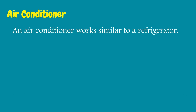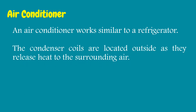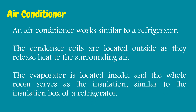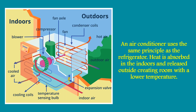An air conditioner works similar to a refrigerator. The condenser coils are located outside, as they release heat to the surrounding air. The evaporator is located inside, and the whole room serves as the insulation, similar to the insulation box of a refrigerator. An air conditioner uses the same principle as the refrigerator — heat is absorbed indoors and released outside, creating a room with a lower temperature.